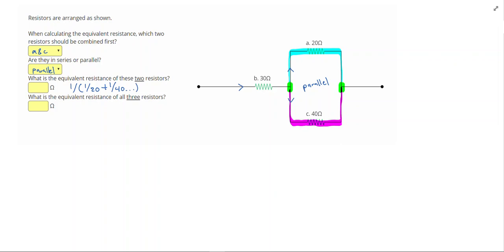When I plug that in, I get 13.3 ohms as the equivalent resistance. So now I'm going to replace that section between those two green dots with one path with 13.3 ohms of resistance. Again, notice that in parallel, the equivalent resistance is actually lower than either resistor.